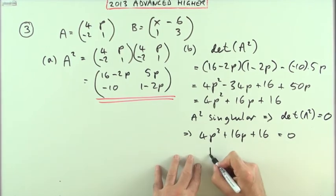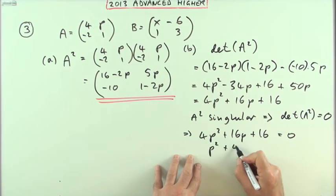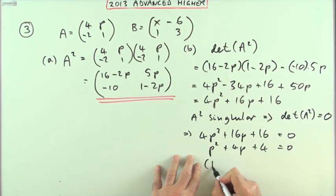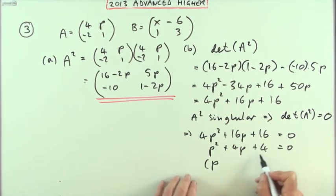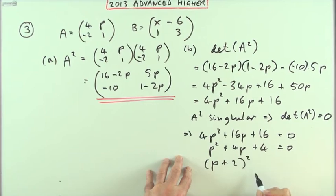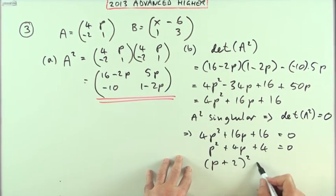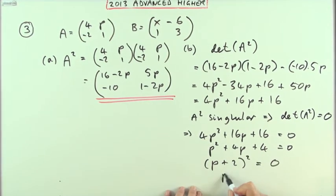And that's a perfect square there. I've got p plus 2 all squared: square the first, square the last, twice the product. (p plus 2) squared is 0, so p equals negative 2.